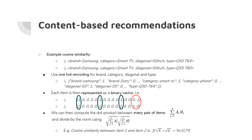Applying one-hot encoding to two Samsung smart TV examples produces long binary vectors. Shared values like brand Samsung, smart TV category, and same diagonal size all equal 1 in both vectors. The type number differs — type Q50T64 might be 1 for item one and 0 for item two, and vice versa for type Q55T80.